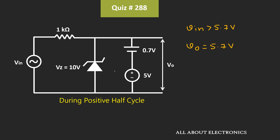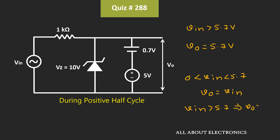That means this Zener diode will not go into the breakdown region, and the output voltage will get clipped to 5.7V. So when the input voltage is between 0 to 5.7V, Vout is equal to Vin. And when Vin is greater than 5.7V, Vout is equal to 5.7V. This is the case during the positive half cycle.